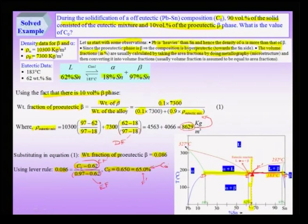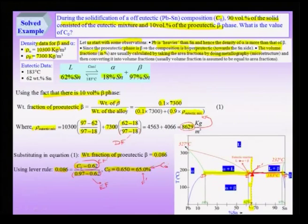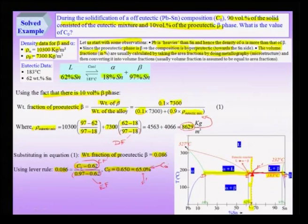By repeatedly applying the lever rule and using the definition that density equals mass per unit volume, we note that metallographic data gives volume percent, which must be converted to weight percent before using the lever rule — since phase diagrams express quantities in weight percent. Using these simple conversion formulae, I can calculate the mean composition from metallographic data. Conversely, knowing the composition, I can calculate the phase fractions.